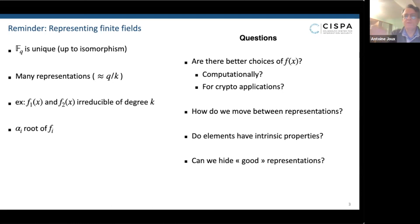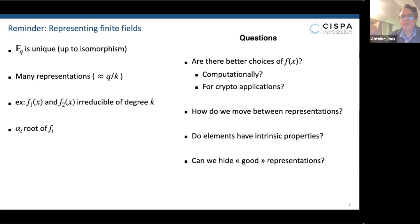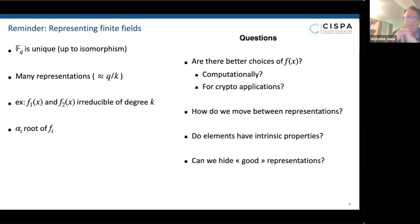To move between representations, the only thing you have to do is find a root of the target polynomial with respect to the source polynomial. This can be done using root-finding algorithms, which are well known and run in polynomial time. Now, how should you choose f(x), your irreducible polynomial? It depends on what you want to do with it. If you want to compute as quickly as possible, it's nice to have f(x) with structure that helps with modular reduction. For cryptographic applications it depends, and we'll see what was proposed for the FFI problem.